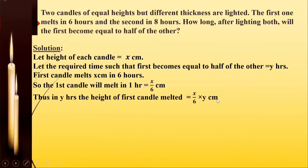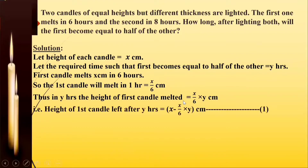Now how much of the first candle will be left? Initially we had x centimeters of candle height and x upon 6 into y has melted. So the height of the first candle that is left will be x minus xy upon 6 centimeters after y hours.